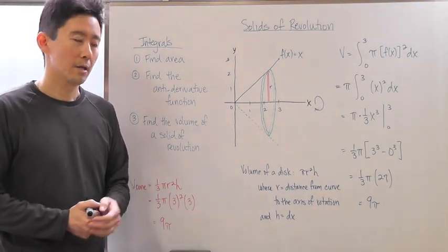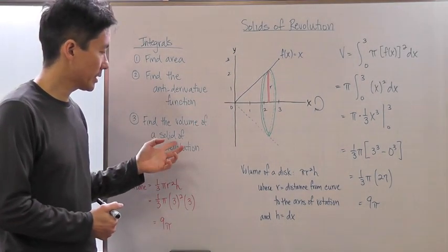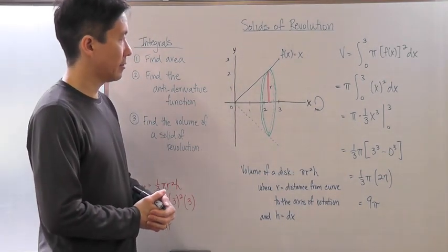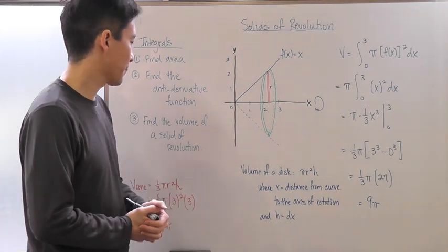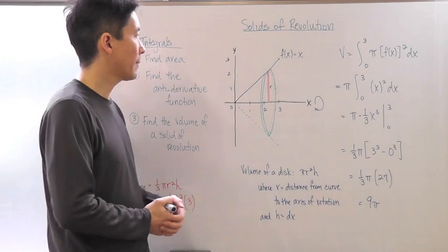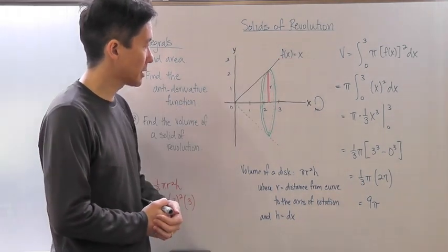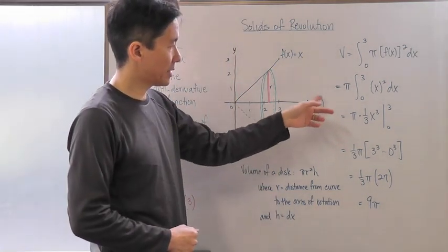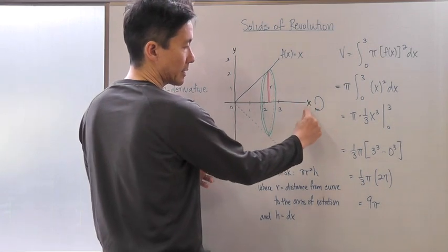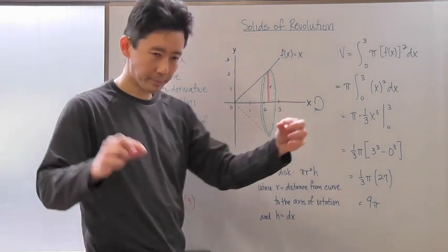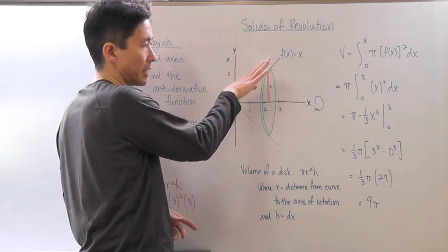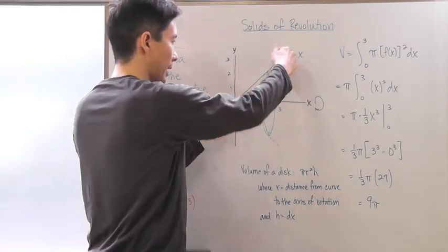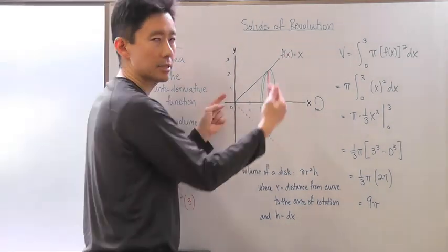Before we show how to do this, let's make sure we know what a solid of revolution actually refers to. We have a curve — let's say f(x) = x — drawn from 0 to 3. The axis of revolution here is the x-axis. When you spin that line around the x-axis, it actually creates a cone.